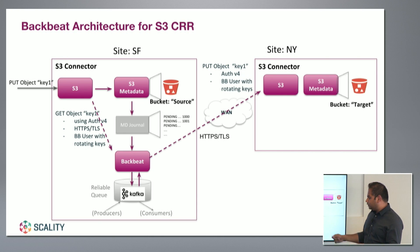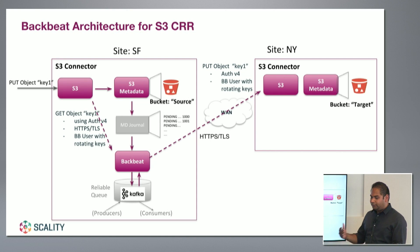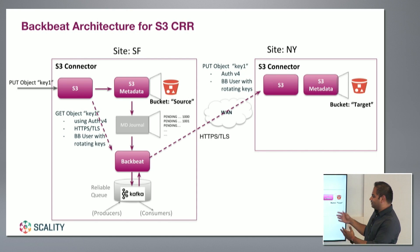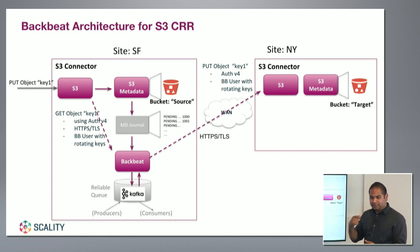When we built it, one thing we wanted to keep in mind was that we want to stick to Amazon spec. The reason is that people are familiar with the process — it's already a monumental task to understand how replication works between two regions on AWS. You don't want to learn something new again for RS3, for example. We want to leverage existing APIs and existing SDKs so you don't have to come up with new tools or new code.